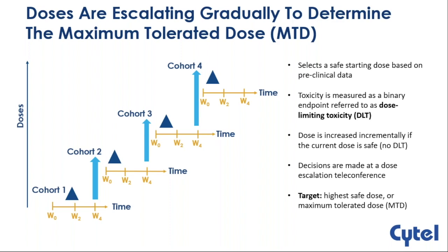For each cohort of three to six patients, you check whether any has a dose-limiting toxicity (DLT). If a patient has a DLT, that's a safety alarm. Doses are increased if things look safe. After each cohort, you call a dose escalation meeting including clinicians, principal investigators, statisticians, pharmacokineticists, and biomarker experts. They decide, based on available data, what the next dose should be. When you see a safety signal, you also decide whether to stay or de-escalate.